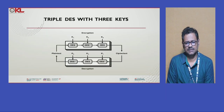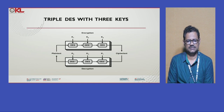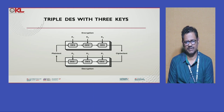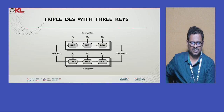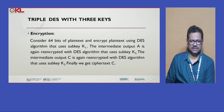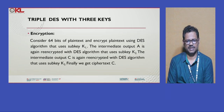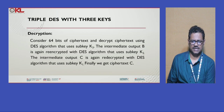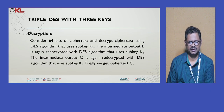Next, triple DES with three keys: in the previous case we used only two keys applied three times. Here, triple DES with three keys means three different keys are applied. On the plain text, first apply K1 to get an intermediate product, then apply K2 for another intermediate product, then apply K3 for the final cipher text. For decryption, the reverse order is used: K3, K2, K1. On 64 bits of plain text, apply K1 to get output A, encrypt with K2 to get the next output, then re-encrypt with K3. For decryption, apply K3, K2, K1 in reverse to finally obtain the plain text.